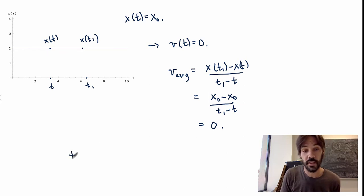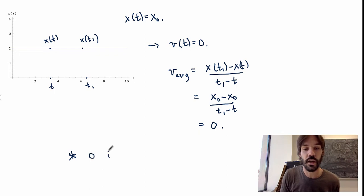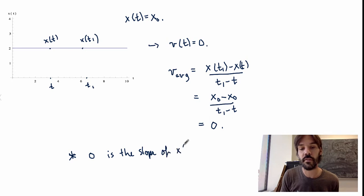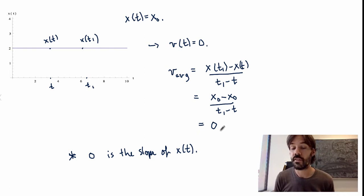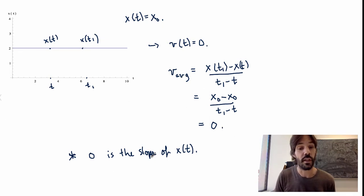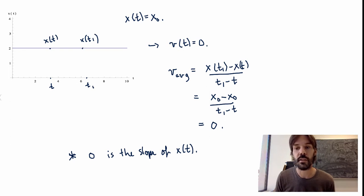It's a pretty simple case. One observation I want to make is that zero is the slope of the function x of t. Indeed, x of t is a horizontal line, so its slope is zero. Now that could just be a coincidence, but it turns out it won't be. The velocity always has something to do with the slope of the position, or more generally the tangent line, as we'll see.